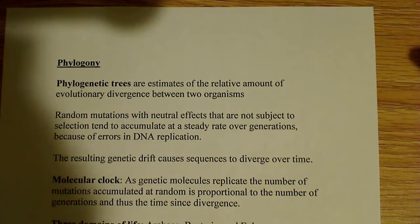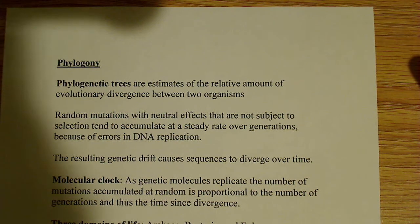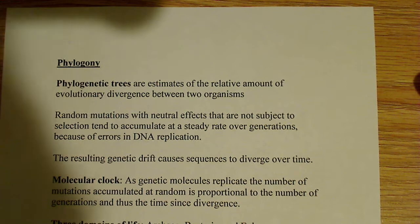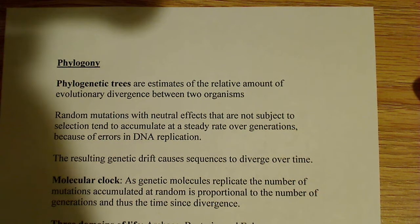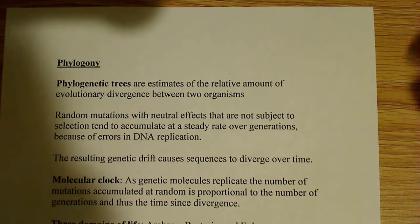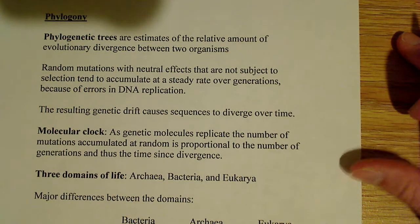In relation to that, random mutations occur quite often — not at a very high rate, but they do occur, usually due to errors in replication or errors in the replication machinery. If you have random mutations with neutral effects that are not subject to selection, they tend to accumulate at a steady rate over the generations, because of errors in DNA replication. These things are not perfect, although very close to perfect — that's why we don't have mutations going on all the time. And there is that little bit of genetic drift going on, which causes sequences to diverge over time.